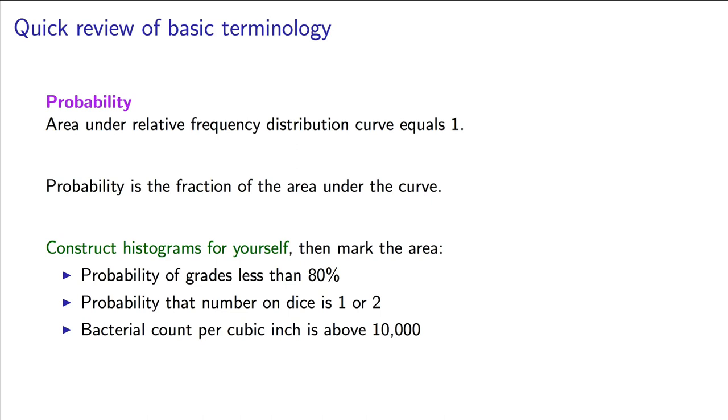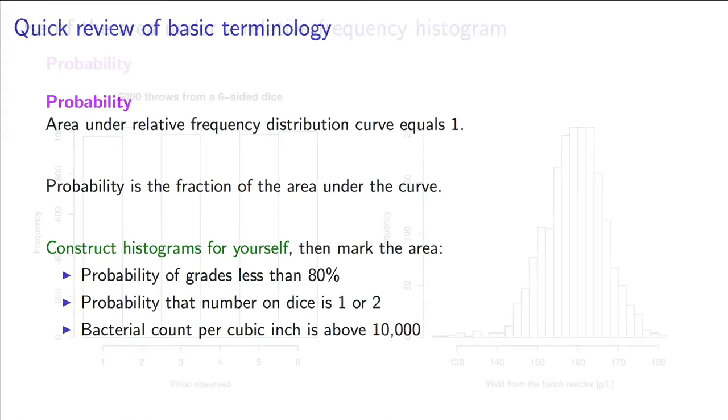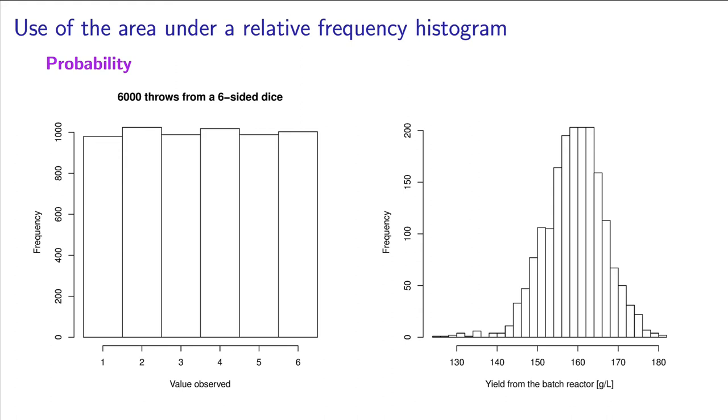Let's look at the idea next, that probability represents the area under a histogram. If we have scaled our histogram to have a relative frequency axis, then the area under the histogram is 1, or 100%. This allows us to ask interesting questions. On the plot on the left, what is the probability that the number thrown on the next dice is a 1 or a 2? On the plot on the right, what is the probability of having a batch yield greater than or equal to 170 grams per litre?